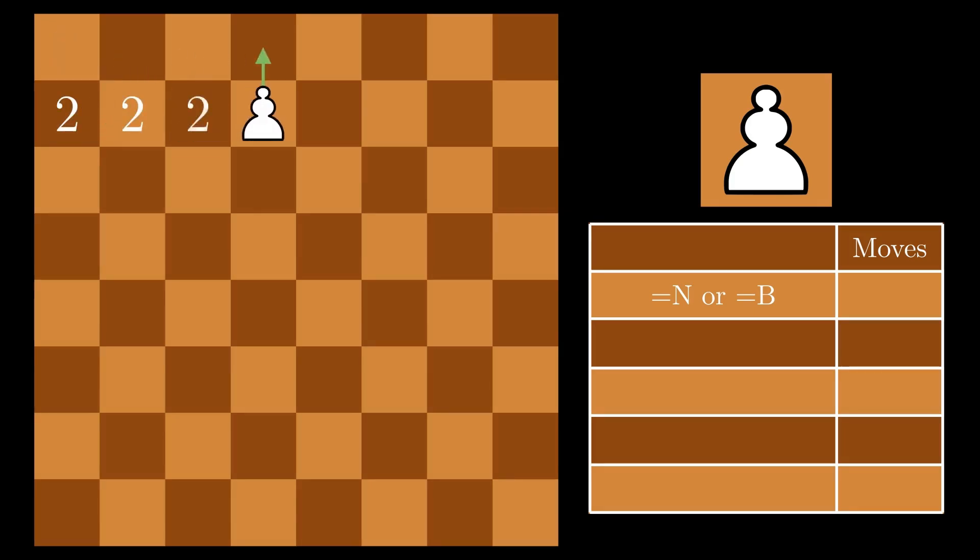That makes two moves per square, or 16 for the entire rank. Since these moves are also possible with check, that is another 16 moves.